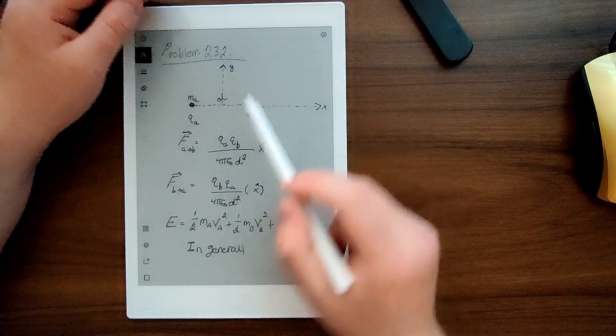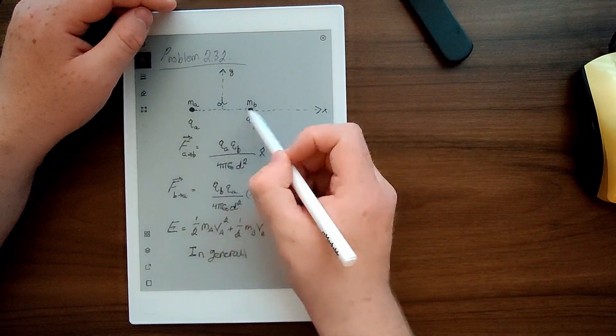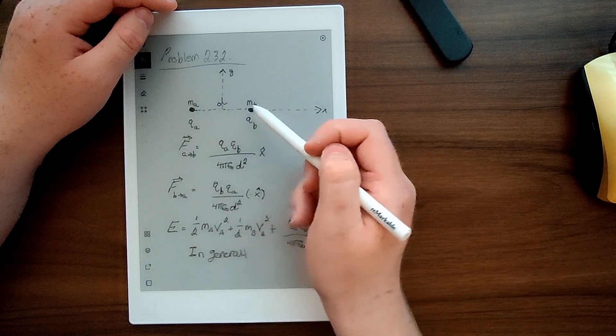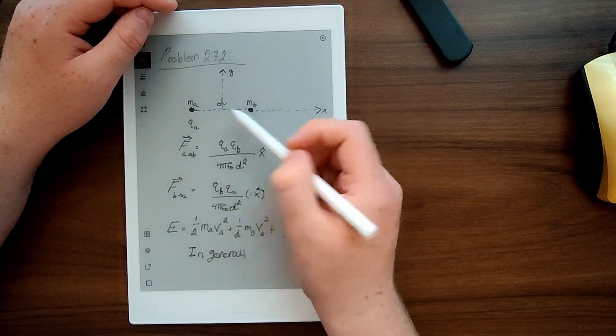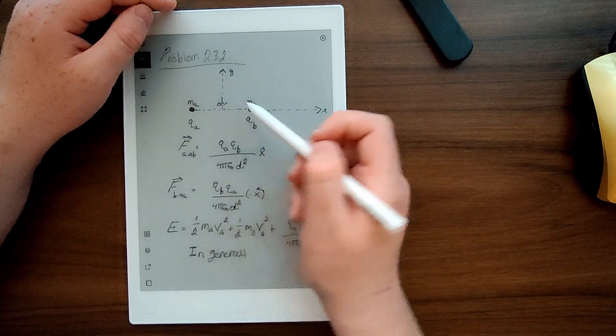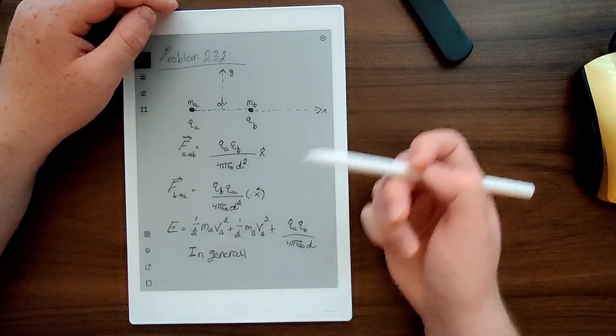So I have a diagram here. We have two charges, qa, qb. I wrote the masses there. And I set a distance d. The problem says distance a. Same thing.